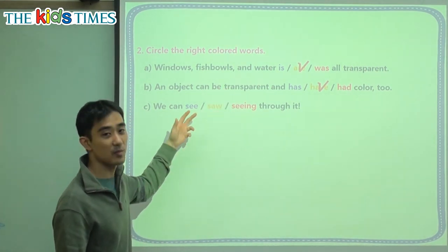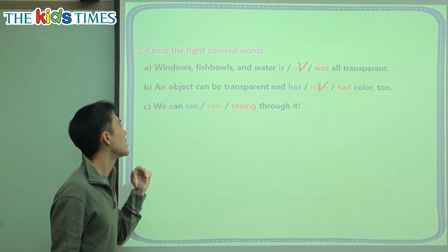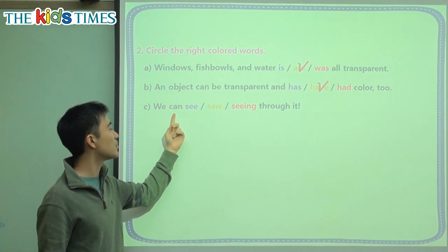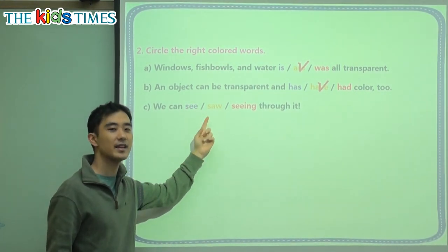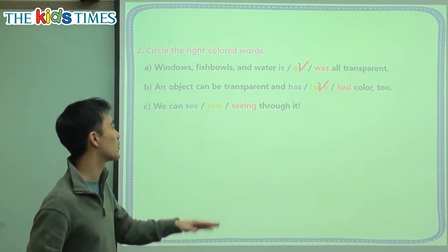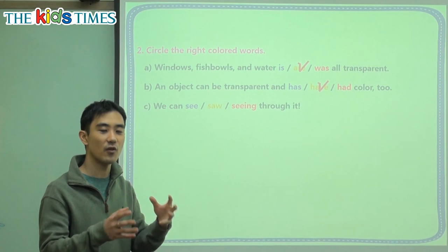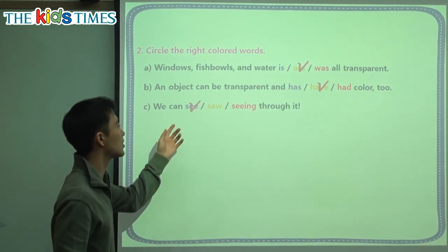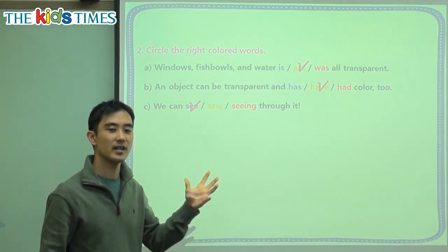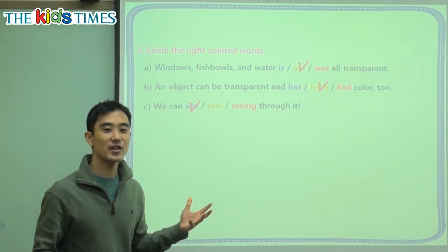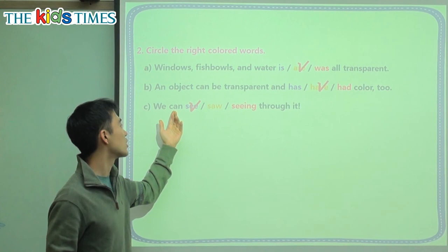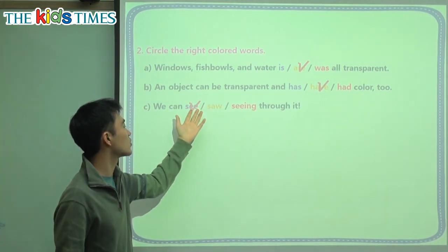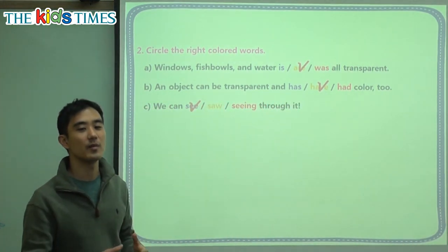We're going to practice this one more time in number three. C, we can blank through it. Again, we have our friend here, can. What happens after can? Do we change the verb after can? No, we don't change the verb after can. We leave the verb in the original form. So we say can and the original form of this is see. It sounds hard but here's a simple rule. We never change the verb after can. So we never, never say can saw, can seen, can has. We just want to keep the original form of the verb after can.